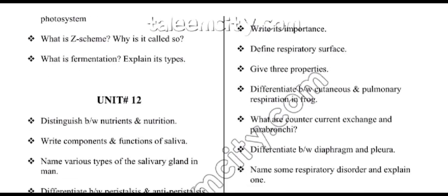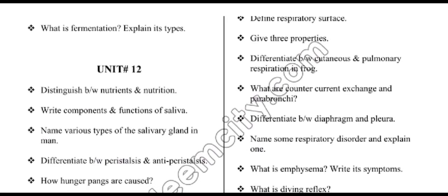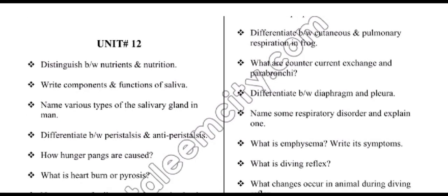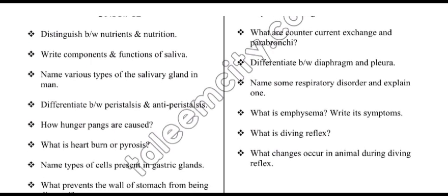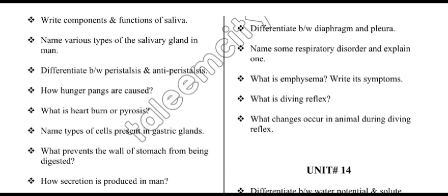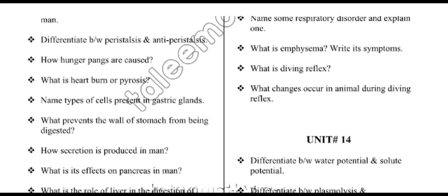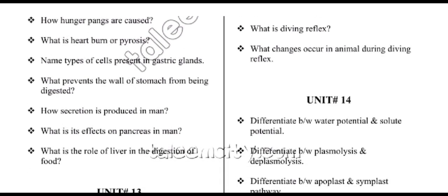From unit number twelve, we have: distinguish between nutrients and nutrition; components and functions of saliva; name various types of salivary glands in humans; differentiate between peristalsis and antiperistalsis; how hunger pains are caused; what is heartburn and pyrosis; name types of cells present in gastric glands; what prevents the wall of the stomach from being digested; how secretin is produced in humans and what is its effect on the pancreas; what is the role of the liver in digestion of food.